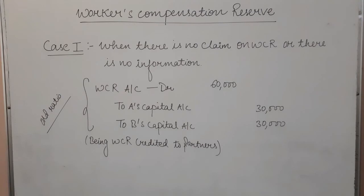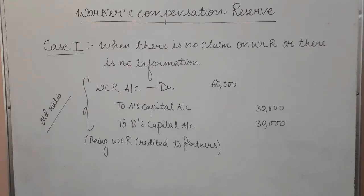Workers' compensation reserve account is debited with Rs. 60,000 — the balance sheet amount — to A's capital account and to B's capital account. Note that I have used capital account here because there is no information indicating otherwise, so I am assuming a fluctuating capital account. In case of a fixed capital account, the entry would be to the current account. Since there is no claim, the reserve becomes free and is distributed between old partners in their equal ratio.